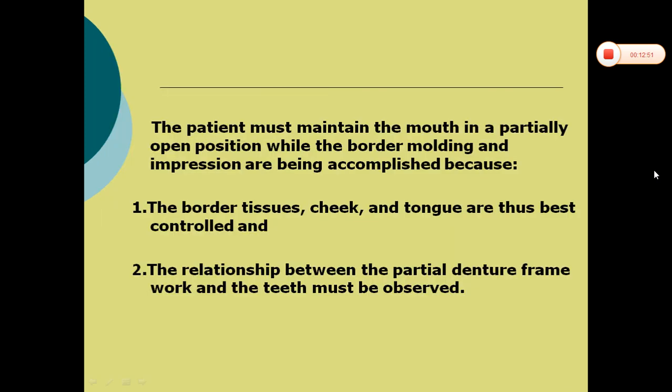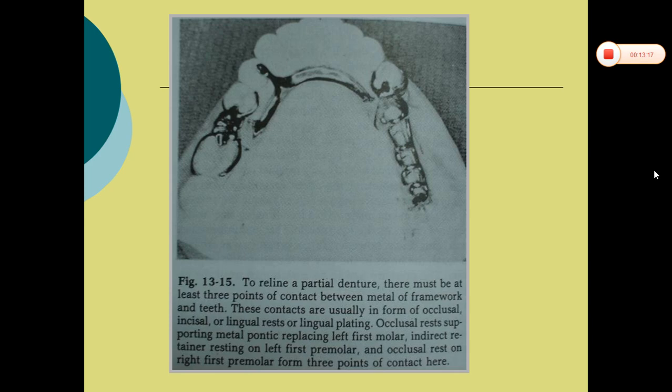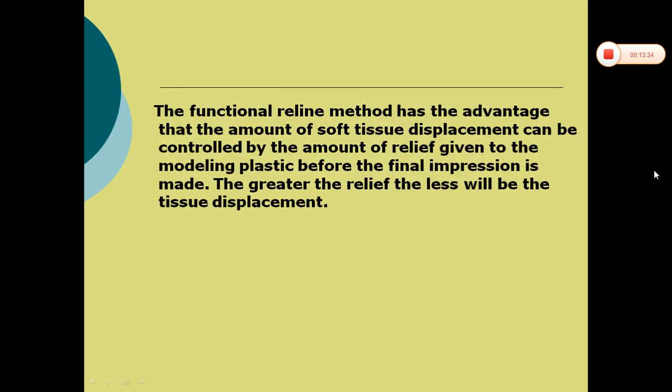The patient must maintain the mouth in a partially open position while the border molding and impression are being accomplished, because the border tissues — cheek and tongue — are thus best controlled, and the relationship between the partial denture framework and the teeth must be observed. The functional reline method has the advantage that most soft tissue displacement can be controlled by the amount of relief given to the modeling plastic before the final impression is made. The greater the relief, the less will be the tissue displacement.